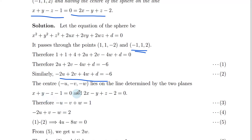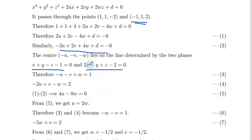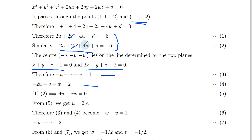Substituting center (−u, −v, −w) into the plane equations: −u − v − w + 1 = 0 (equation 3) and −2u + v − w = 2 (equation 4). Subtracting equation 1 from equation 2: 4u − 8w = 0, giving 4u = 8w, so u = 2w. Substituting into equation 3: −2w − v − w = 1, giving −w − v = 1 (equation 6), and into equation 4: −5w + v = 2 (equation 7).